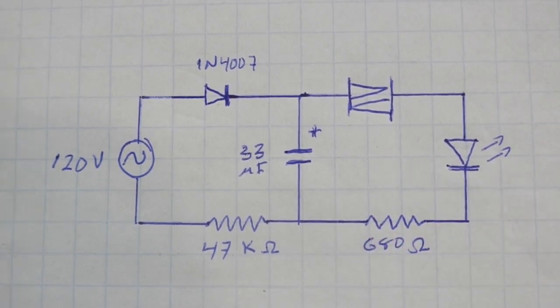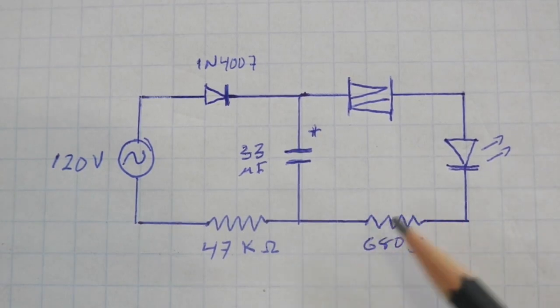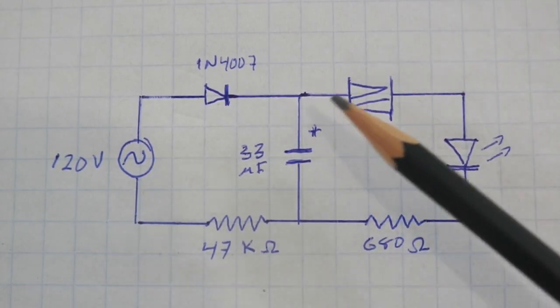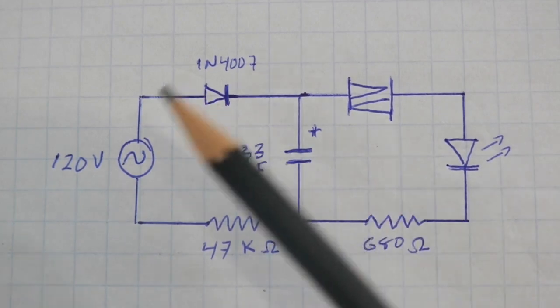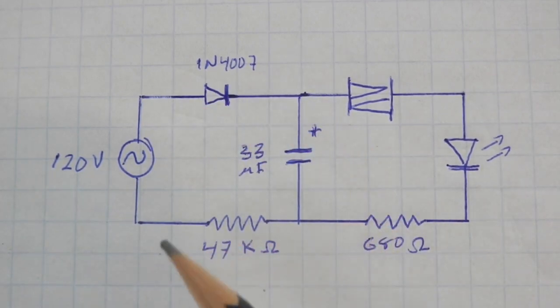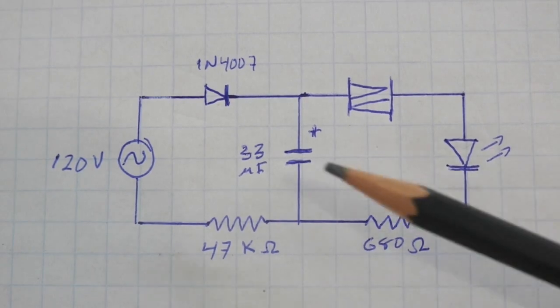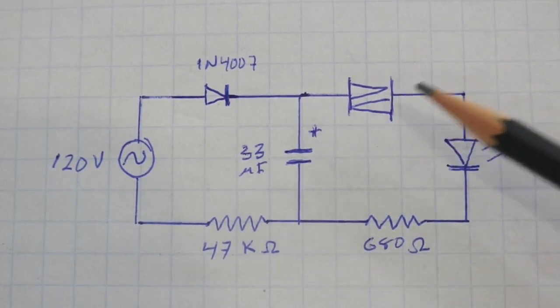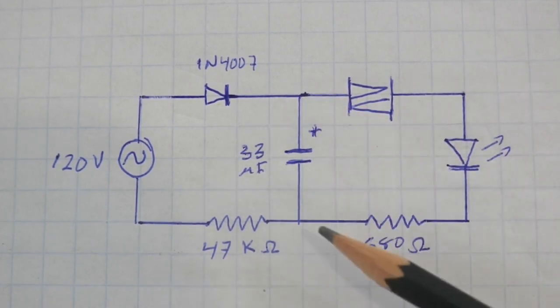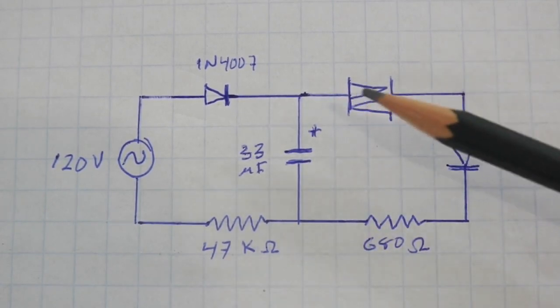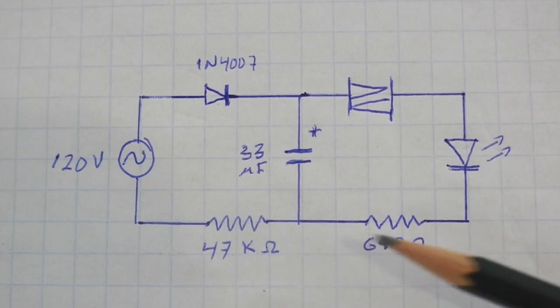Now notice that this resistor is of a very low value compared to the other one. Therefore, the current in this part of the circuit is much larger than the current in this other path. Therefore, the capacitor will discharge quickly and its voltage will reduce, and also the current through this path.